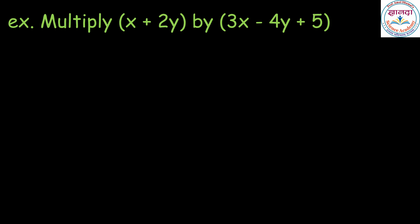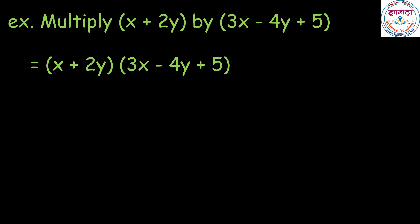Let us discuss the multiplication of polynomial by binomial. Multiply bracket x plus 2y by bracket 3x minus 4y plus 5. The product can be written as, using the distributive property, we get: